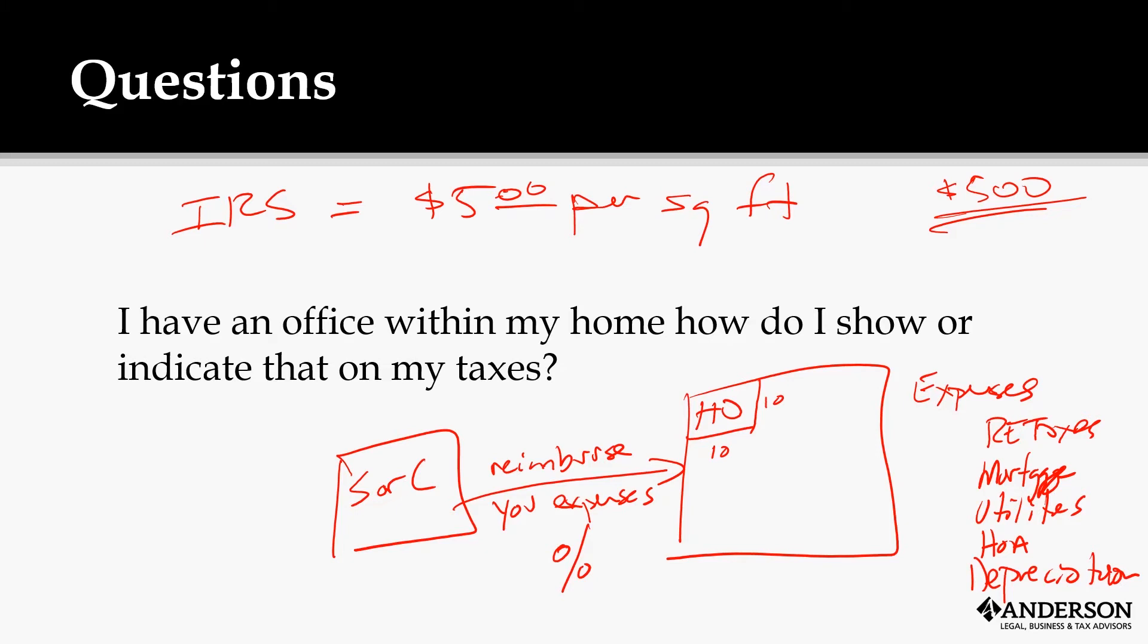The other way people do is they look and say the entire house, let's say the house is 30 by 30, so you have one-ninth would be the deduction. So if you have expenses of $9,000 throughout the year, you would get a $1,000 deduction, one-ninth of that, because this is 100 square feet versus 900 square feet.